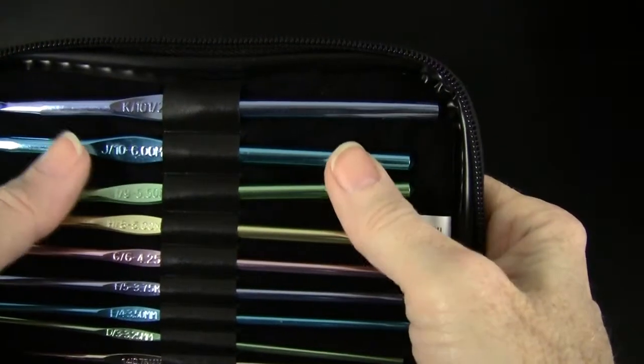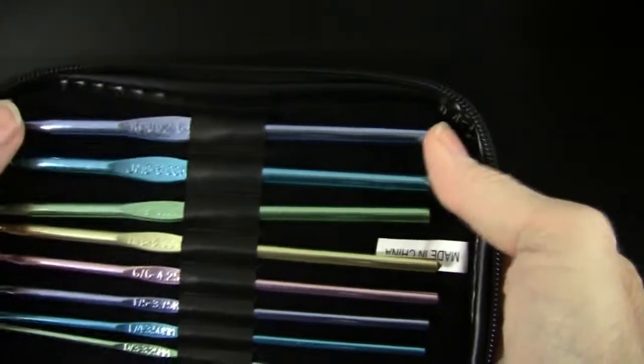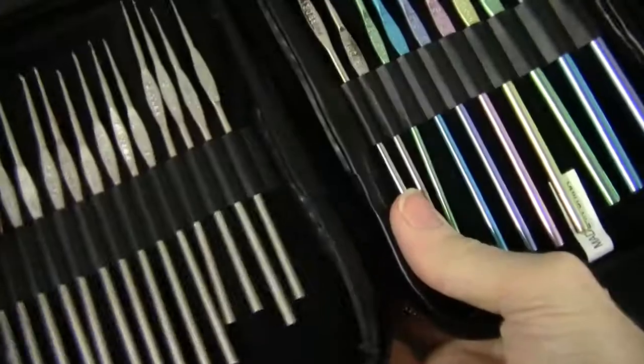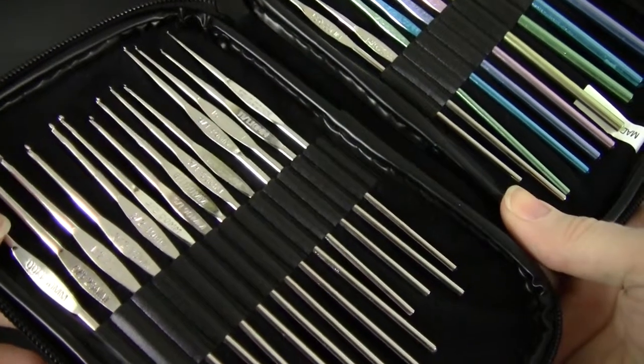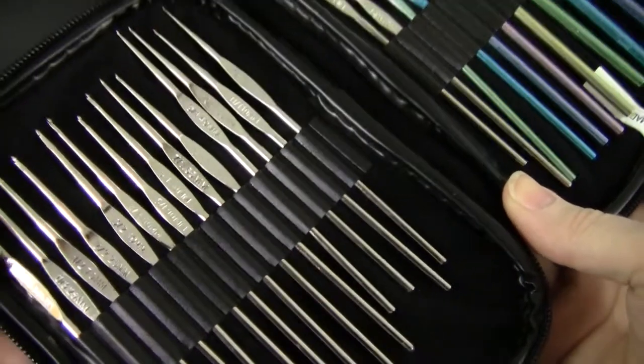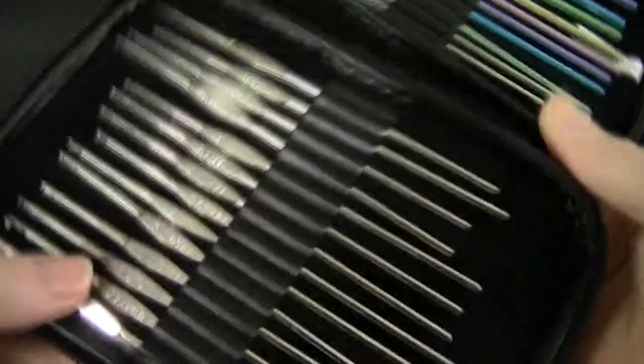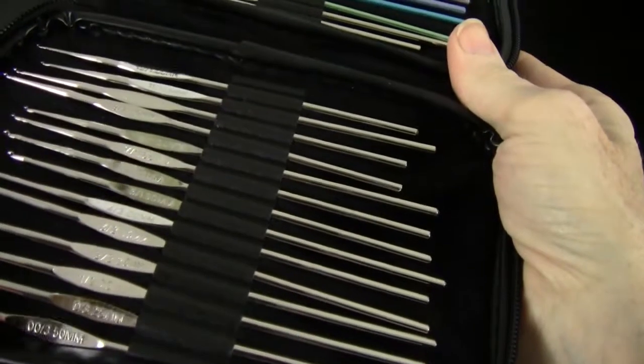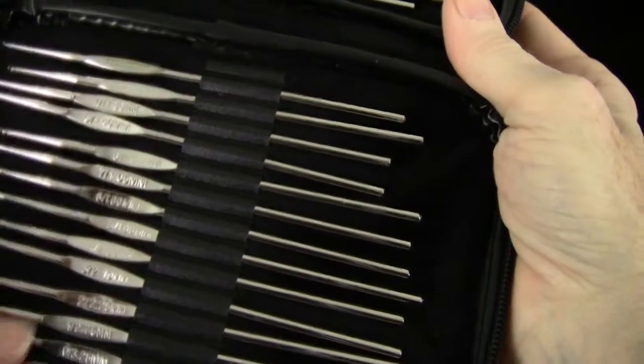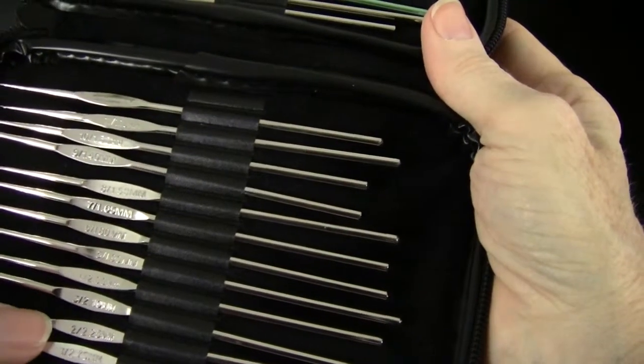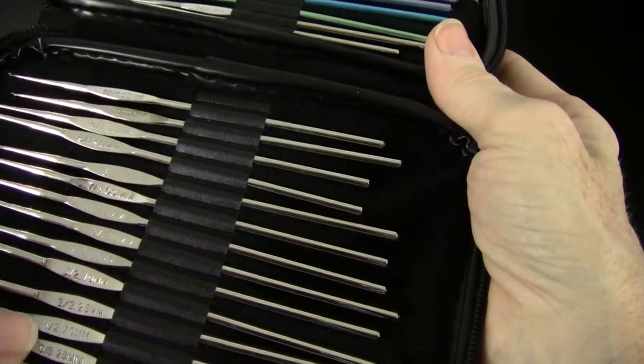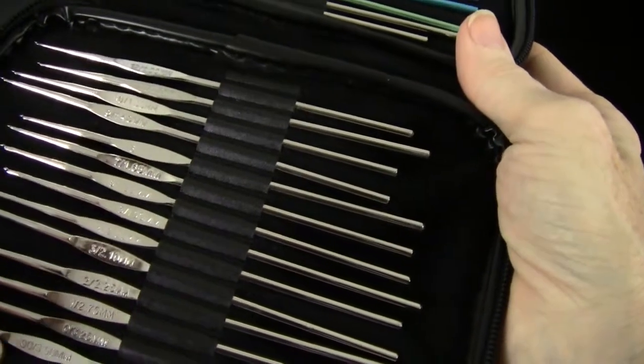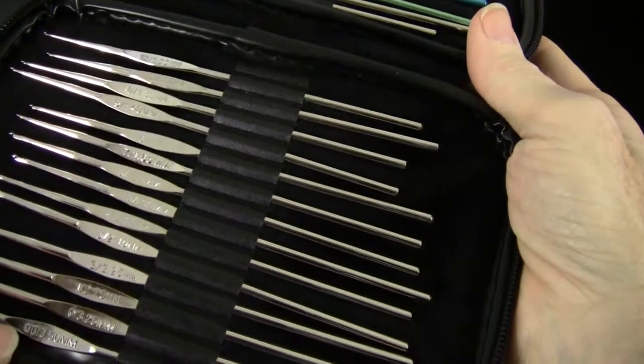And then in the steel hooks, they range from size 00, which is—oh, this is testing my eyesight here. I can't read that. I know this one's a 2.5, so this one's a 2.75 and this one's a 3.25 and 3.5. I did it! Okay, the largest one is a 00, which is a 3.5 millimeter.